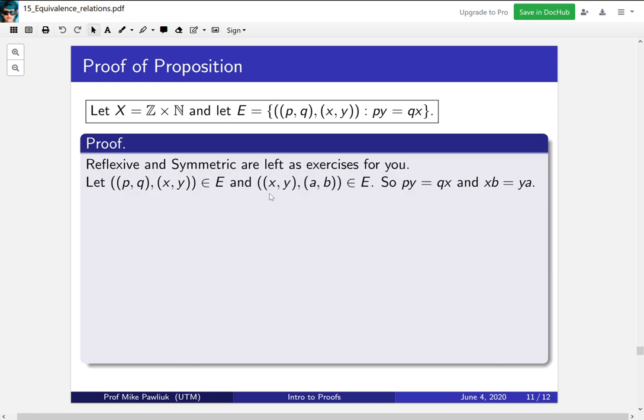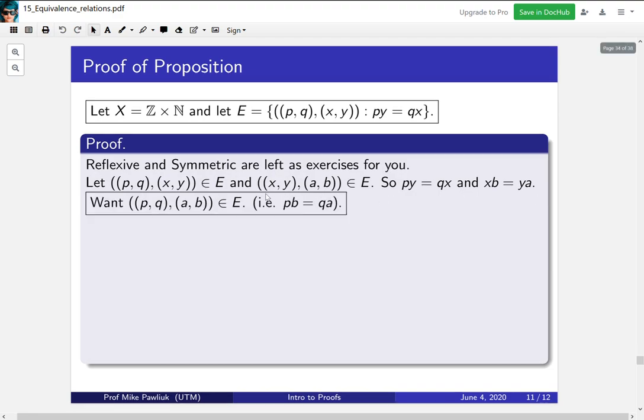All right, now what we want to show is this. We want to show that first and third are related, and if you unwrap what that means, it's pb is equal to qa. All right, so now we're in the realm of doing multiplication. We have two equalities, and we want to get a third equality.